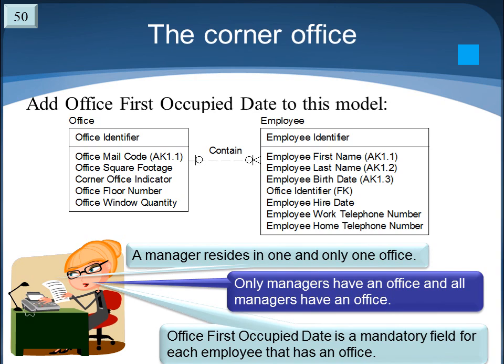There are also a lot of exercises in the class. This next slide is a sample exercise where we take an existing data model and expand it. We take this office and employee model and add one more data element to it — office first occupied date — and we also need to accommodate a whole bunch of rules. So it gives us good practice in not only building models from the beginning, but also extending existing models.